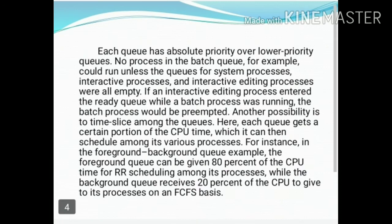Each queue has absolute priority over a lower priority queue. For example, the foreground queues may have absolute priority over the background queues. The queue types include: first, system processes; second, interactive processes; third, interactive editing queue; and fourth, batch queue.